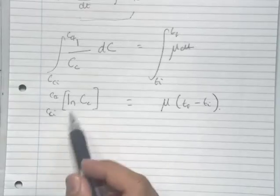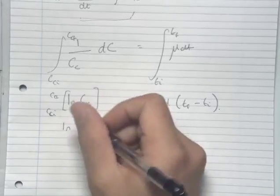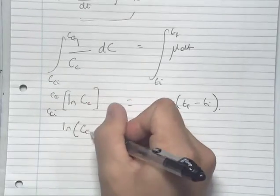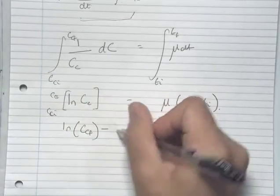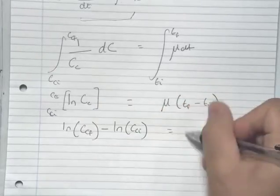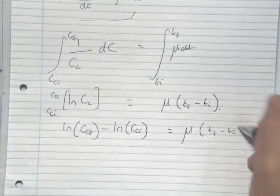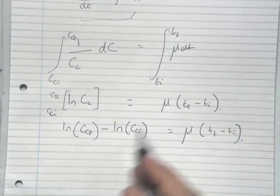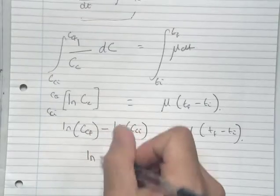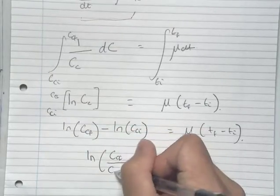We can put our limits into the left hand side and we get the natural log of our final concentration minus the natural log of our initial concentration. And from the laws of logs, we can simplify the left hand side to the log of final concentration over initial concentration.